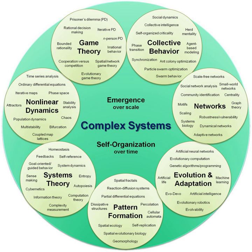As a field of study, complex systems is a subset of systems theory. General systems theory focuses similarly on the collective behaviors of interacting entities, but it studies a much broader class of systems, including non-complex systems where traditional reductionist approaches may remain viable. Systems theory seeks to explore and describe all classes of systems, and the invention of categories that are useful to researchers across widely varying fields is one of systems theory's main objectives. As it relates to complex systems, systems theory contributes an emphasis on the way relationships and dependencies between a system's parts can determine system-wide properties. It also contributes the interdisciplinary perspective that shared properties link systems across disciplines.